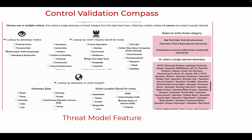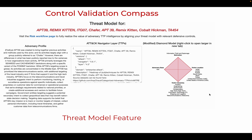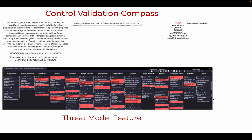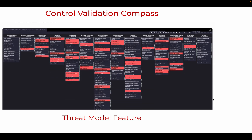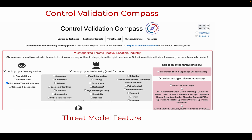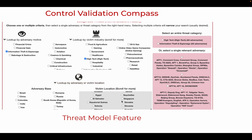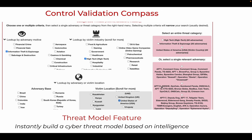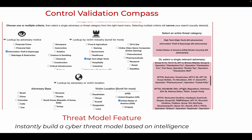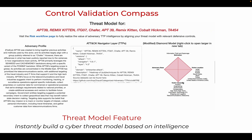The Control Validation Compass threat model feature shines in this area. The threat model capability allows users to instantly surface relevant adversaries grouped into key categories, including attacker motivation, location, victim industry, and geography — all based on human-vetted linkages. The output includes complete attack technique mappings associated with each adversary or entire categories, complemented with custom Diamond Model and ATT&CK heat map visuals.